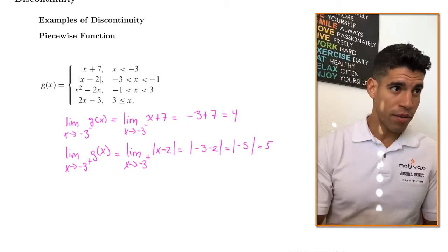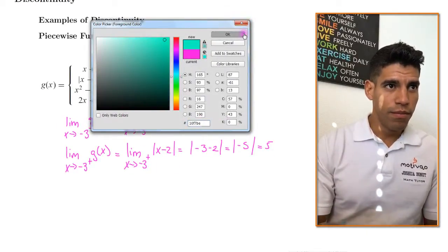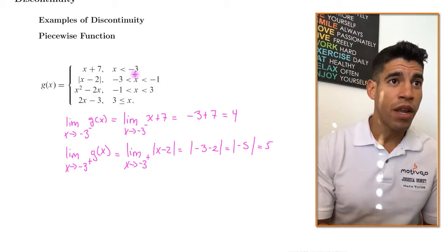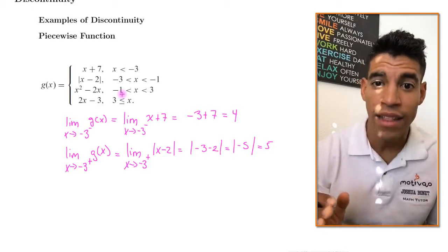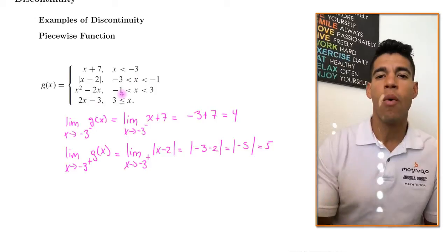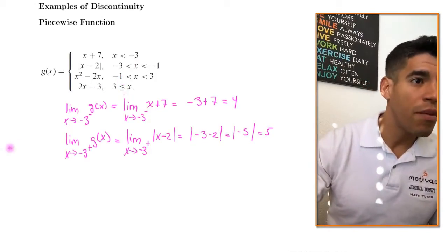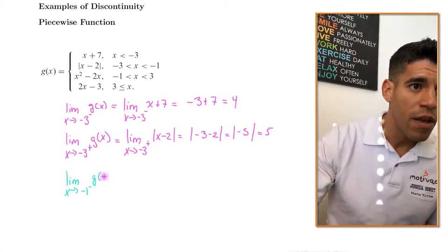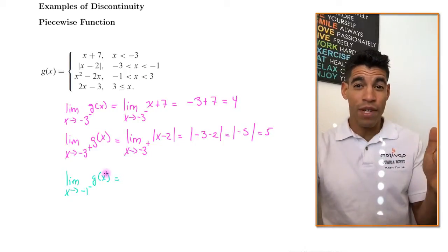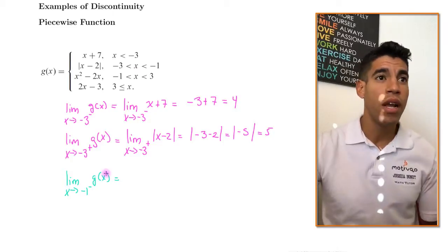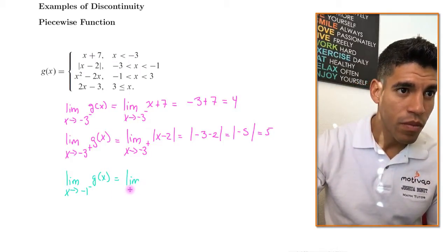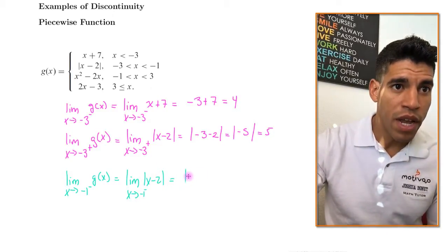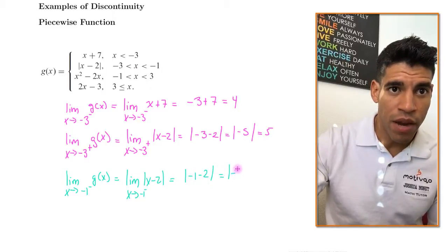Now let's check our next point at negative 1. Similar to negative 3, negative 1 is not defined either, so we know it's discontinuous at negative 1. The limit when x approaches negative 1 from the left of g of x uses values less than negative 1, so we use absolute value of x minus 2. Substituting negative 1: absolute value of negative 1 minus 2 equals absolute value of negative 3, which is 3.